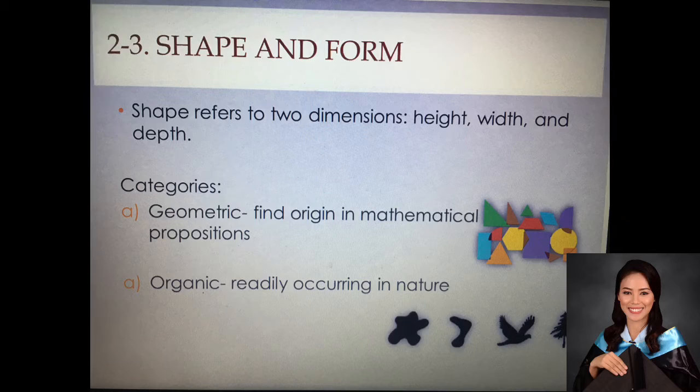Now, let's move on to another element of visual arts: shape and form. These two elements are related to each other in the sense that they define the space occupied by the object of an art. For two dimensions, shape refers to height and width. But for three dimensions, shape refers to height, width, and depth.